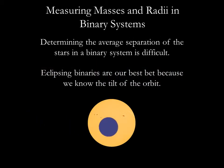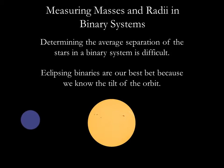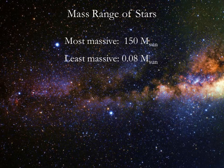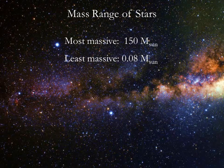Determining the average separation of stars in a binary system is usually more difficult. It's best if we have eclipsing binary stars because these stars orbit edge-on to our line of sight. In a visual binary or a spectroscopic binary, we do not know the tilt of the orbit relative to Earth. The overall range of masses for stars extends from as little as 0.08 times the mass of the Sun to at least 150 times the mass of the Sun. We'll discuss the reasons why this is a little later in the semester.